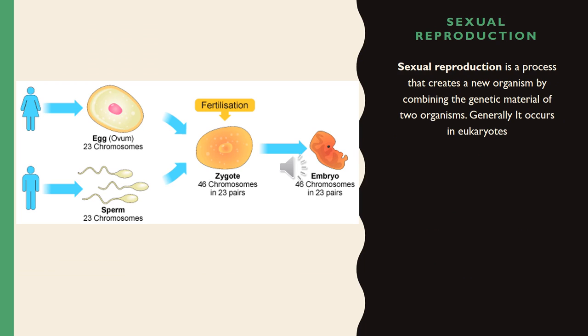Sexual reproduction is a process that creates new organisms by combining the genetic material of two organisms. Generally, it occurs in eukaryotes.